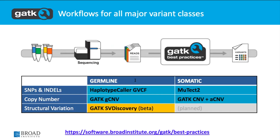We have these best practices workflows for all the major variant classes. For those who are new to the domain, we'll have an introduction to variant discovery — what are the different types of variants and their properties. We have workflows for the main variant classes in GATK. For short variants — SNPs and indels — as well as copy number, we have fully validated production-worthy workflows for both germline and somatic variant analysis. Structural variation is something we still have in development. There is a beta version of a structural variation workflow for germline, and we have an equivalent plan for somatic structural variants, but that's a little further on the roadmap.